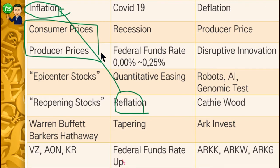Another sign is oil prices going up. When oil prices go up, you pay more for gas, and everything delivered using oil becomes more expensive. Factory machines also use oil to produce more. So when oil prices go up, everything goes up — even food prices go up.